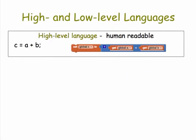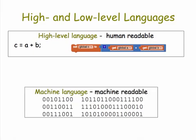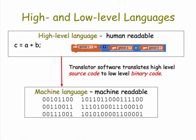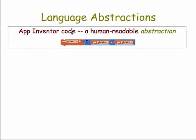Fortunately, we don't have to program in binary code. Computer scientists have created lots of high-level languages that are readable by humans. But of course, in order to run on the computer or on a smartphone, the high-level programs have to be translated into machine language by special software called translator software. It translates the high-level program, which is called source code, into the low-level binary code.